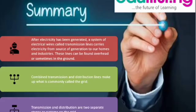The summary of this lesson. After electricity has been generated, a system of electrical wires called transmission lines carry electricity from source of generation to our homes and industries. These lines can be found overhead or sometimes in the ground.